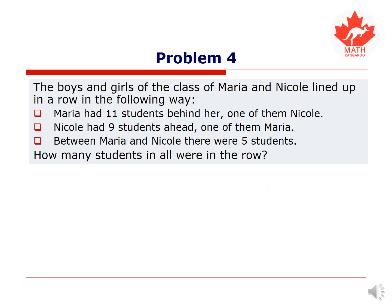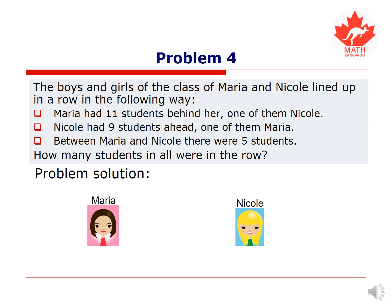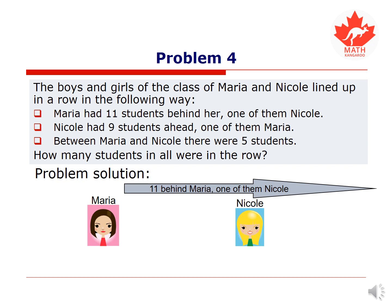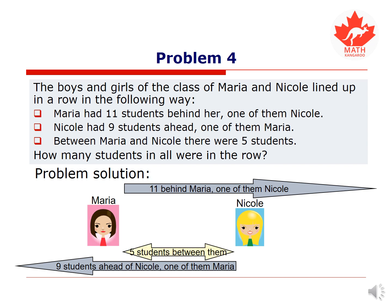Problem 4. The boys and girls of the class of Maria and Nicole lined up in a row. Maria had 11 students behind her, one of them Nicole. Nicole had 9 students ahead, one of them Maria. Between Maria and Nicole there were 5 students. How many students in all were in the row? Let's draw a diagram. We know there are 11 students behind Maria and one of them is Nicole. 9 students ahead of Nicole, one of them Maria, and 5 students between the two girls.